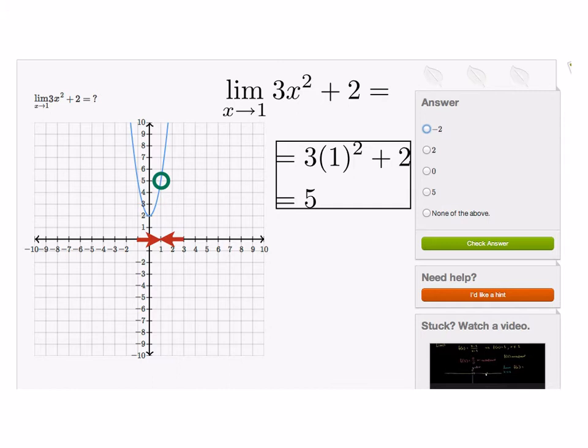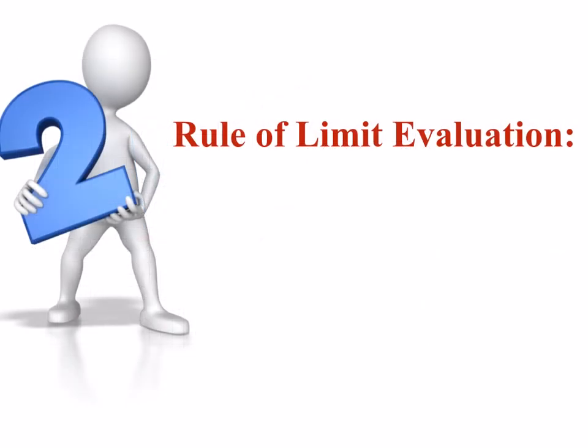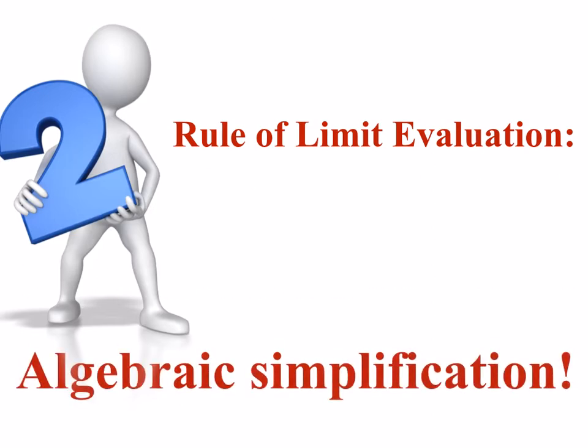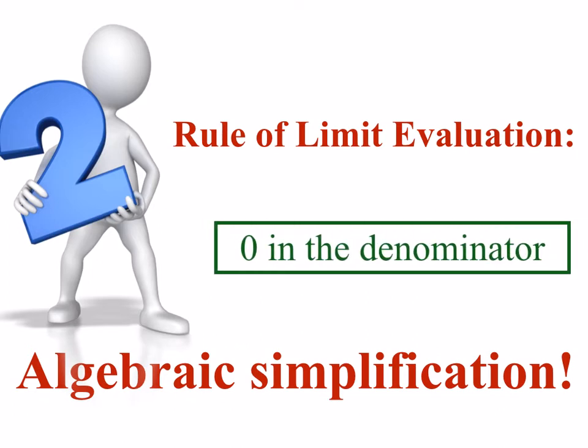Certainly we can have more complicated functions that we might need to find the limit for, so let's consider another rule. The second rule of limit evaluation is to do algebraic simplification. One of the cues that tells us we might want to do algebraic simplification is if, when we plug in our limit point, we get a 0 in the denominator — because fractions are undefined if there's a 0 in the denominator.